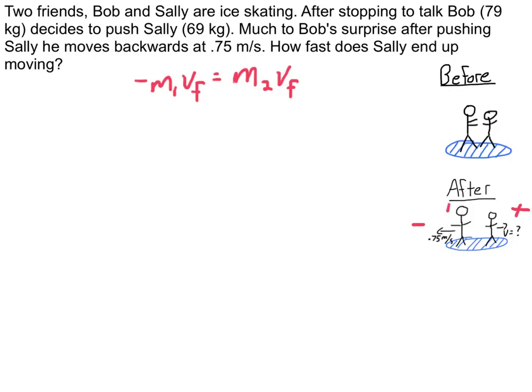I'm also going to call Bob person number one and Sally person number two. So let's actually just plug in and chug out and see what the answer comes out to be. Because really, the only trick is choosing your positive and negative and not forgetting that. So negative mass of Bob is 79. The final velocity he ended up moving at, here's the key, negative 0.75 meters per second.